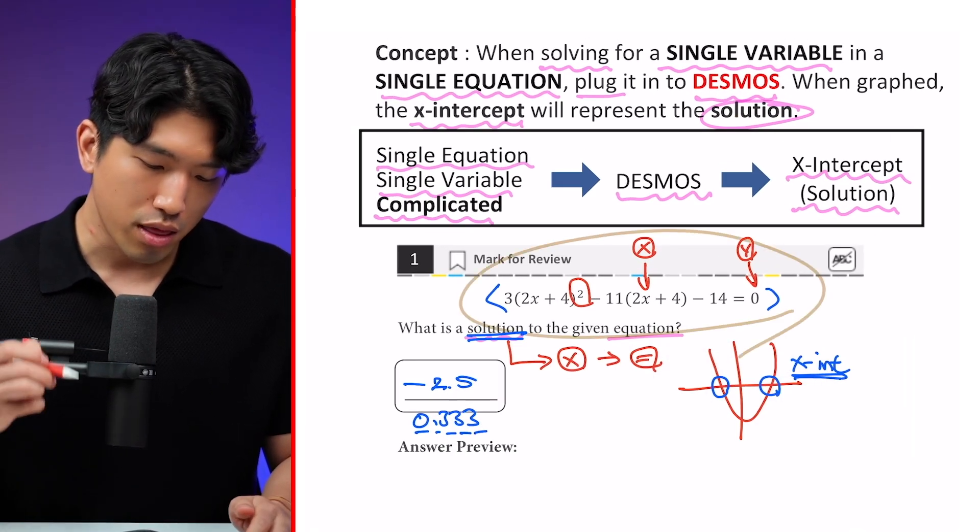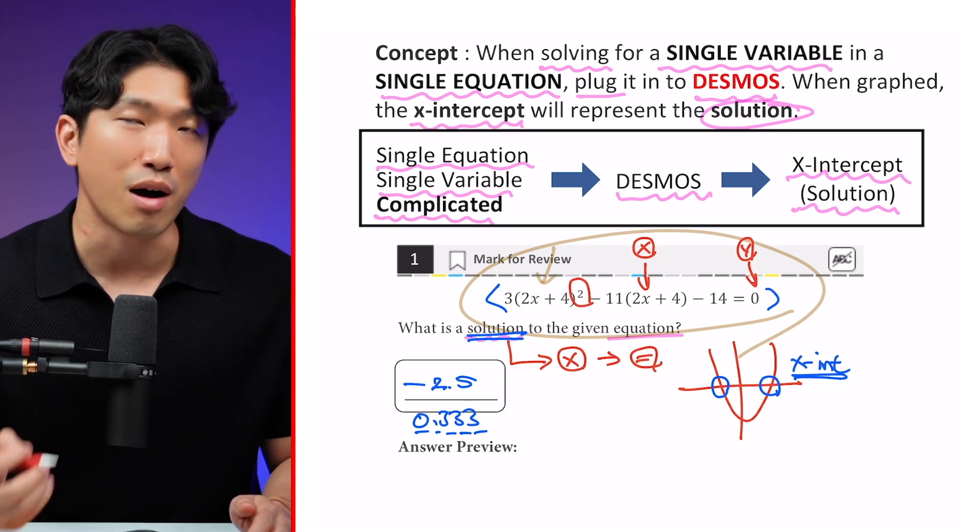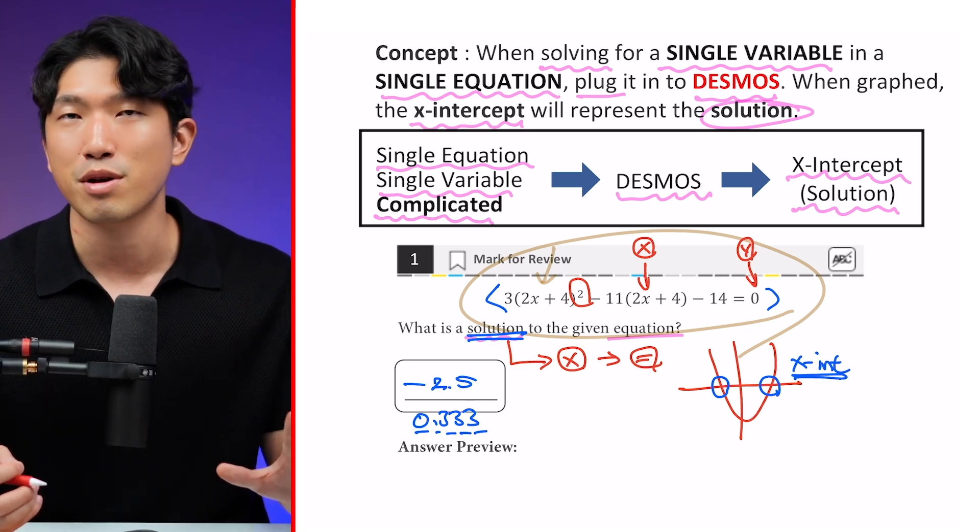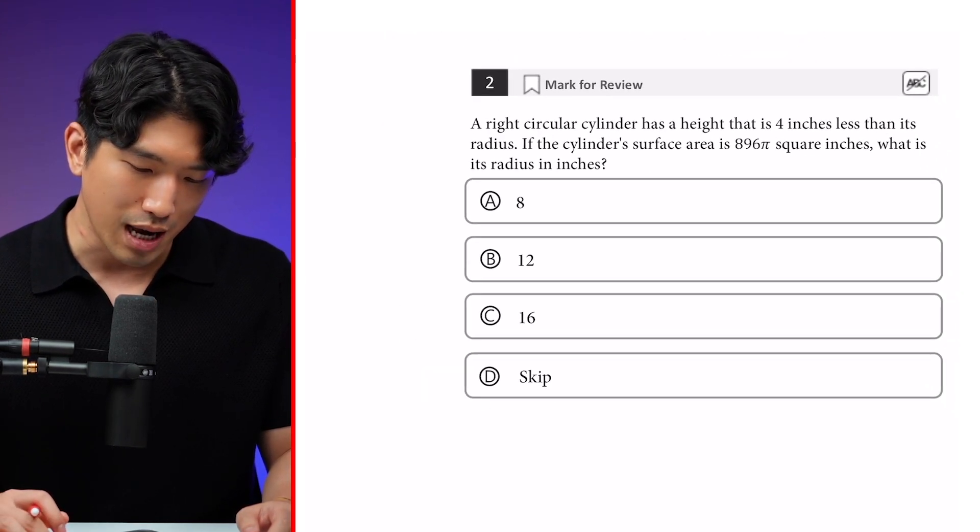So does that make sense? Whenever you're working with a single equation and single unknown variable, and it looks very complicated, then simply pop it into Desmos and go to the x-intercept. Make sense?